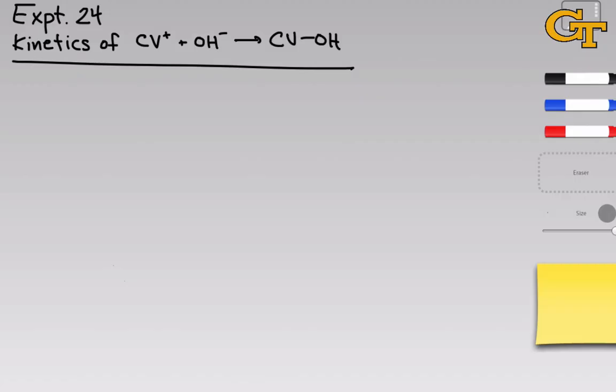We've worked a lot already with the thermodynamics of chemical reactions. The core question related to thermodynamics is how much product forms in the course of a chemical reaction. Quantities related to this include delta G of reaction, the change in enthalpy and the change in entropy, which are packed into delta G, and then K-eq — the equilibrium constant that captures the ratio of products to reactants at equilibrium.